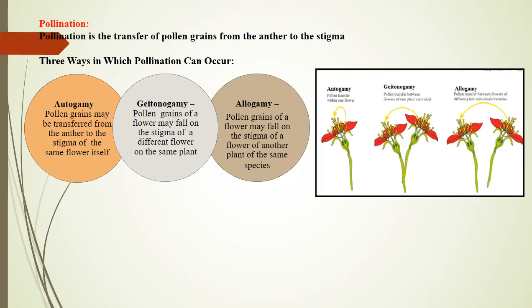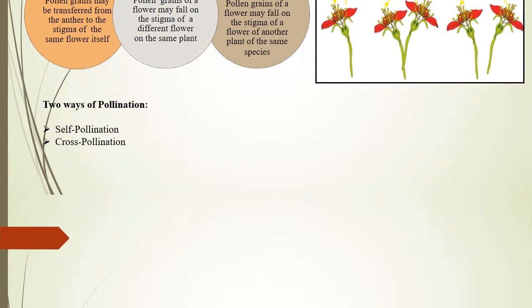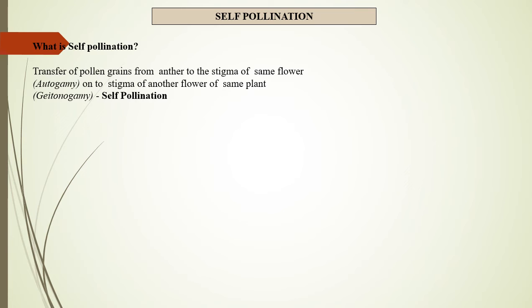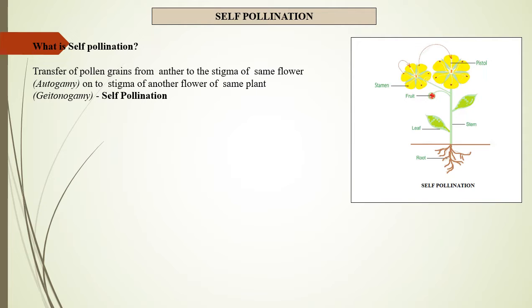Pollination occurs between plants of the same species. There are two ways of pollination: one is self-pollination, the second being cross-pollination. Self-pollination is the transfer of pollen grains from the anther to the stigma of the same flower, which is autogamy, or onto the stigma of another flower of the same plant, which is geitonogamy.